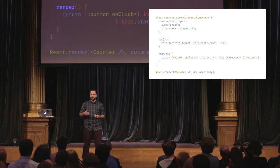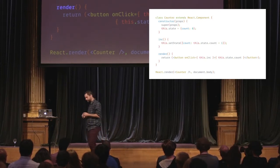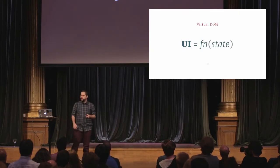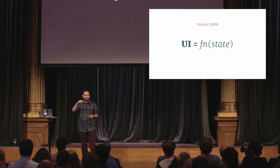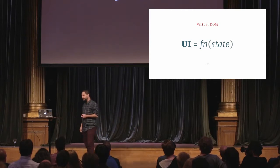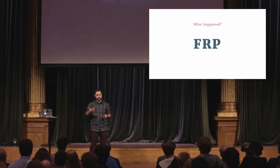If you look at all these technologies — Elm, PureScript — what really allows them to exist is this possibility of doing declarative UIs. A declarative UI means that the UI is the result of applying a function to the current state you have. If you have counter zero, you'll see a button with zero; if you have counter ten, you'll see a button with ten.